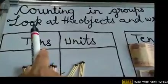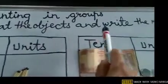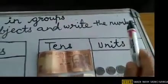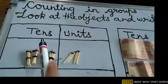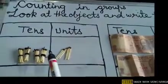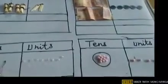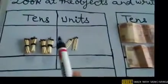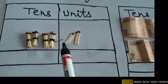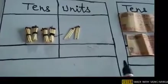Children, read the question after me: Look at the objects and write the number. I have made here 2 columns — a column of 10s and a column of units — and in each column I have kept some objects. You have to count the objects and tell me their exact numbers, then write the numerals and the number names.